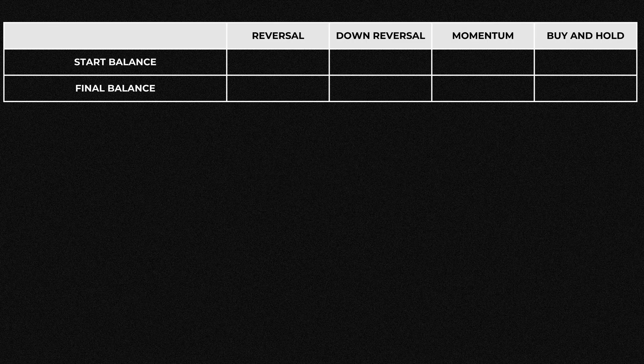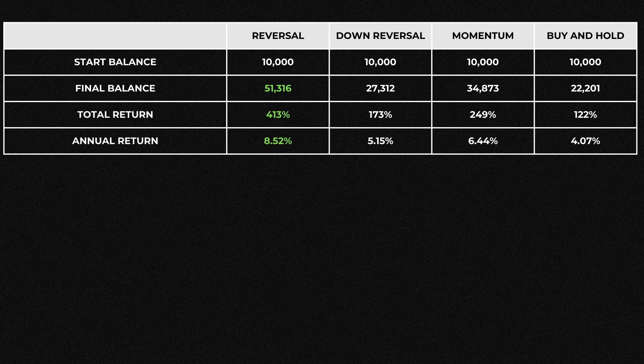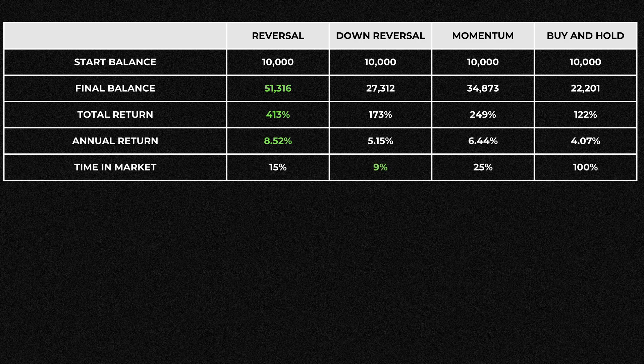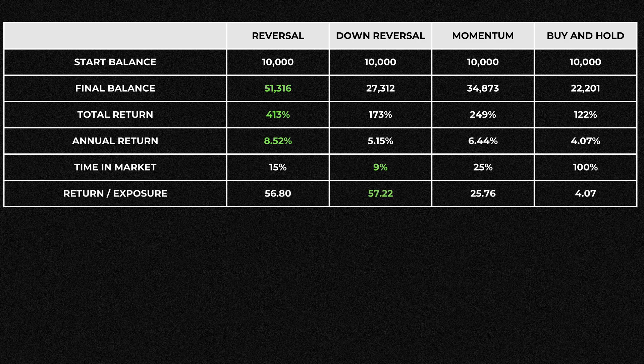Looking at the final balances, reversal beats everything else. The annual returns reflect this, though it doesn't look as clear when I look at the time in market metric. Reversal is at 15% of the time in the market as before. Down reversal is only 9%, so it is even more selective about the trades it takes. The momentum strategy is less selective and is in the market 25% of the time. Looking at return by exposure: 56.8 for reversal, but down reversal actually scores higher at 57.22, simply because it's making a good return while being in the market even less. Momentum is only 25.76.